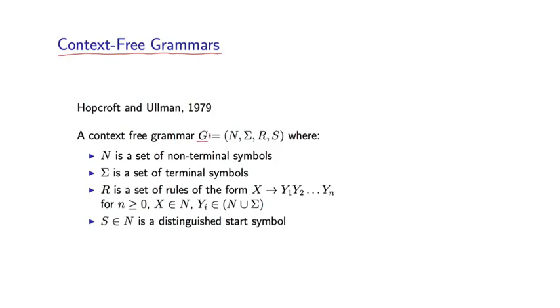So a context-free grammar has the following components. A context-free grammar G is a four-tuple consisting of N, sigma, R, and S, where we have the following elements of this tuple. N is going to be a finite set of what we call non-terminal symbols. Sigma is going to be a finite set of what are called terminal symbols. R is a set of rules. We'll come back to this in a second. And finally, S is some member of N, which is referred to as a distinguished or start symbol in the grammar.